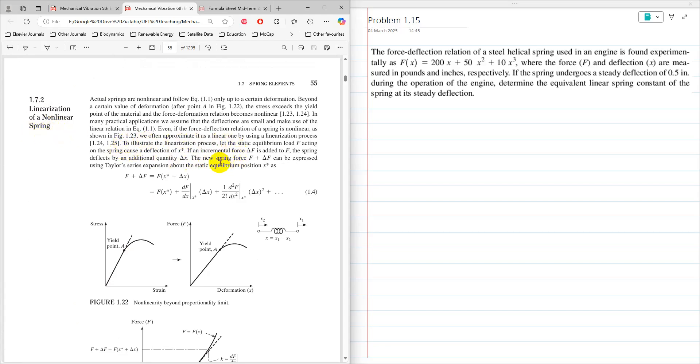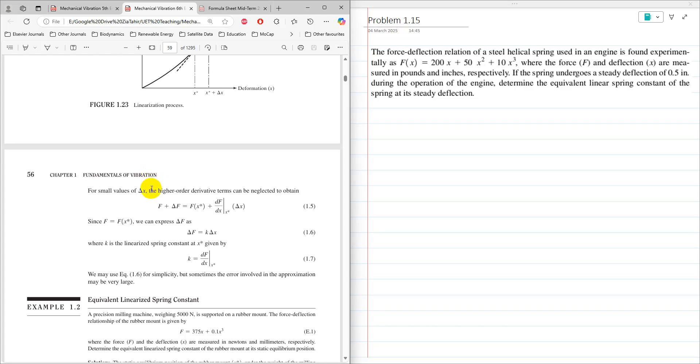We need to consider the static equilibrium load f acting on the spring at the deflection x*. Once you have the value of x*, which in this question is the steady state deflection of 0.5 inches, then we need to find the linearized spring constant k as df/dx at the value of x*, which is the steady state deflection.